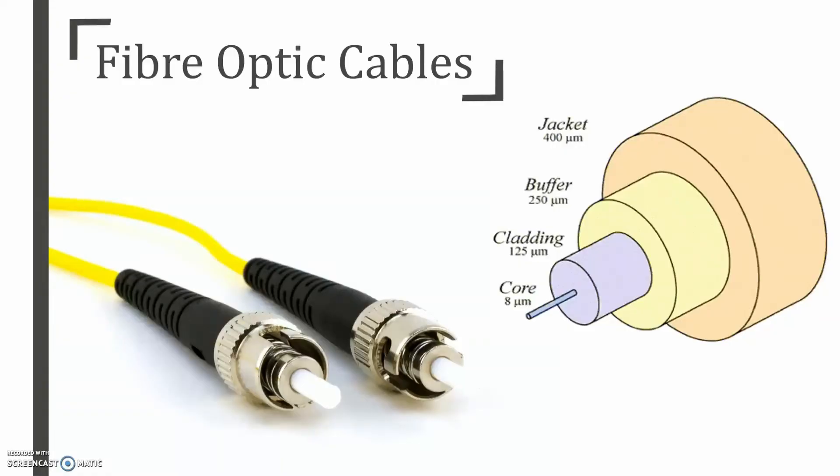Fibre optic cables carry communication signals in the form of light particles or photons. This is generated from pulsating LEDs or lasers. The most basic fibre cable is comprised of many different layers such as the core, cladding, buffer and jacket.